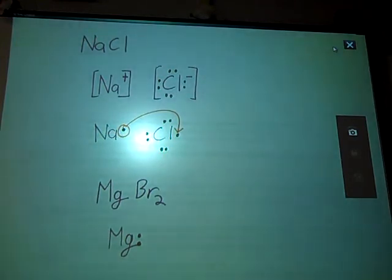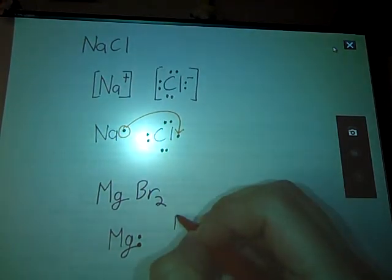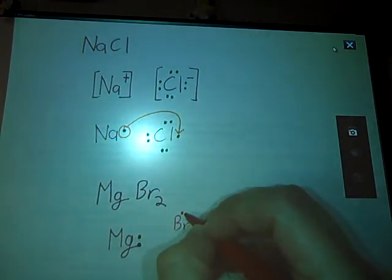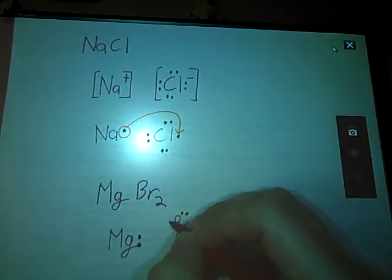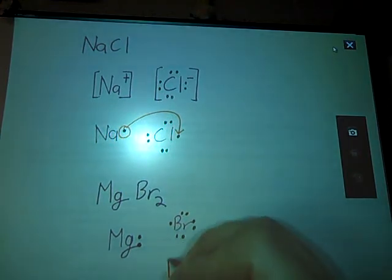My bromines, I'll do them in a different color. My bromines each have seven. Put my lone electron on the left side for ease of drawing.